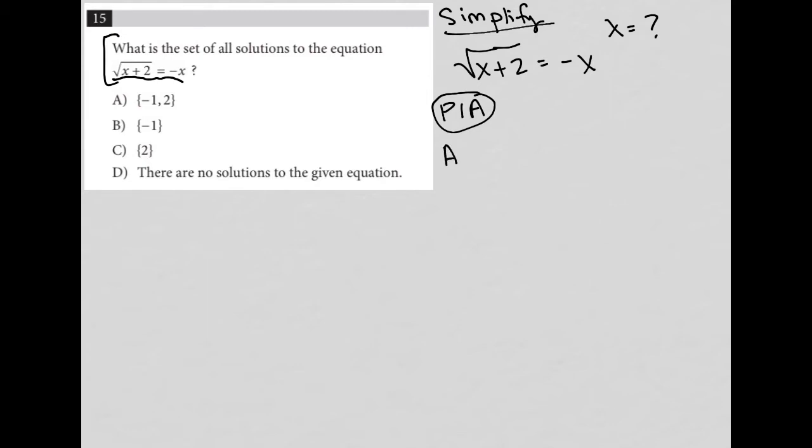Answer choice A says x equals negative 1 and x can equal positive 2. Let's try that. When I have x equal negative 1, I put negative 1 in for x in both places. What I get is the square root of positive 1 equals positive 1, and that is true.